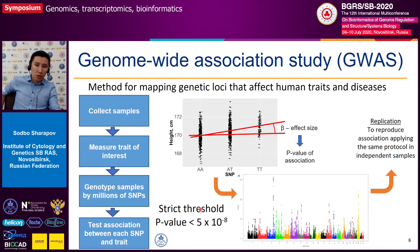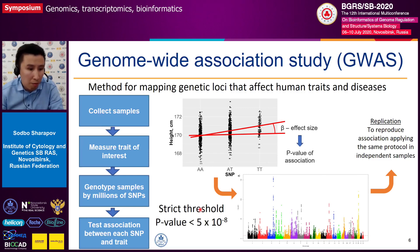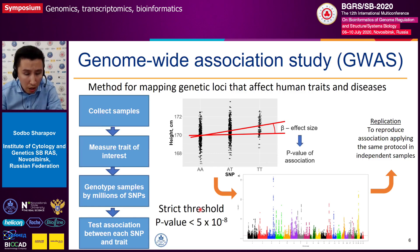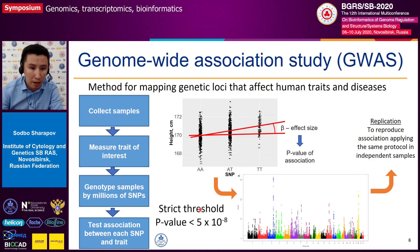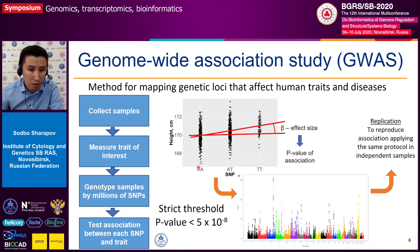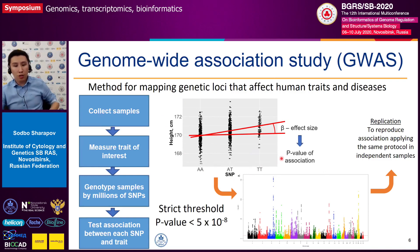Basically, if you want to conduct a GWAS, you need to collect the samples, you need to measure traits of interest in the samples, and you need to genotype the samples by millions of genetic markers, for example single nucleotide polymorphisms, or SNPs. And finally, you need to perform an association test between each SNP and each trait. You can perform the test by applying a simple linear regression analysis, where you regress your trait of interest against the genotype of a genetic marker, out of which you receive the effect size and the p-value of association.